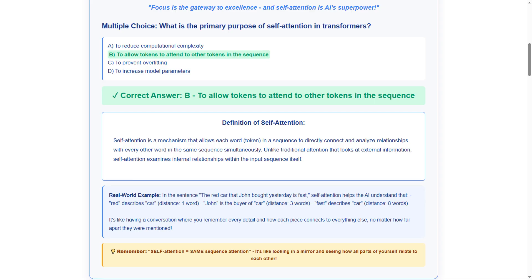Self-attention is a mechanism that allows each word, or token, in a sequence to directly connect and analyze relationships with every other word in the same sequence simultaneously. Unlike traditional attention that looks at external information, self-attention examines internal relationships within the input sequence itself. Simply put, it's internal relationship mapping.